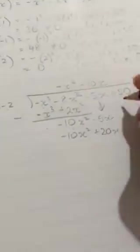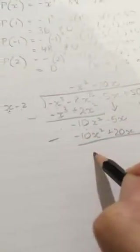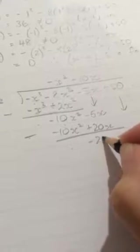So x, what do I need to multiply x by to get negative 10x squared? That's negative 10x. Multiply it out. Negative 10x times x is negative 10x squared. Negative 10 times negative 2 is positive 20x. This minus this is nothing. Negative 5 minus 20 is negative 25x. Now draw that down.